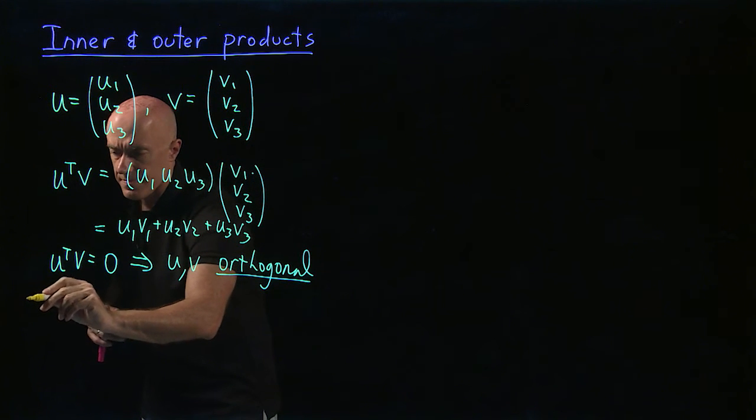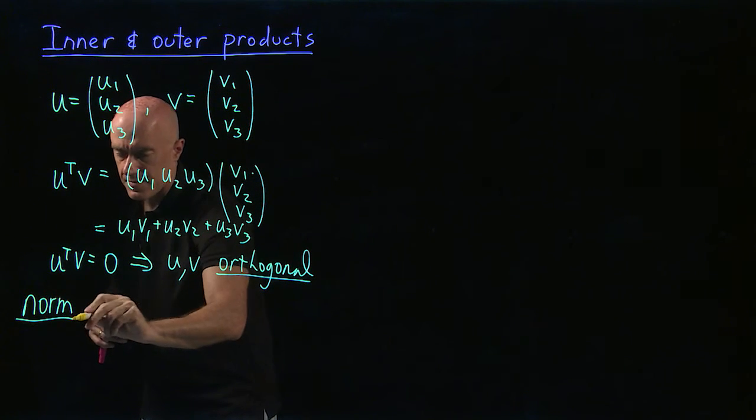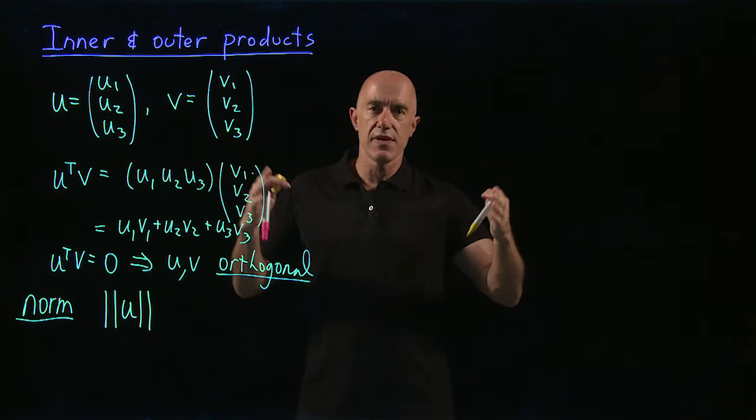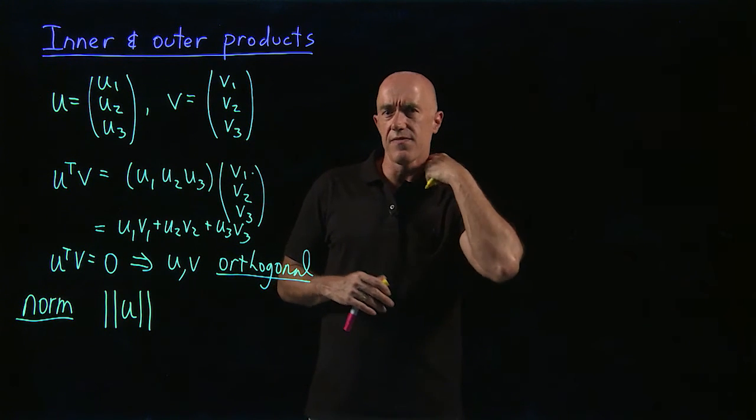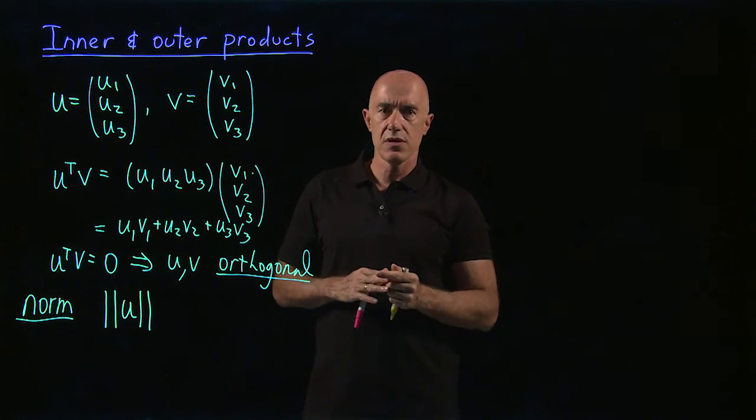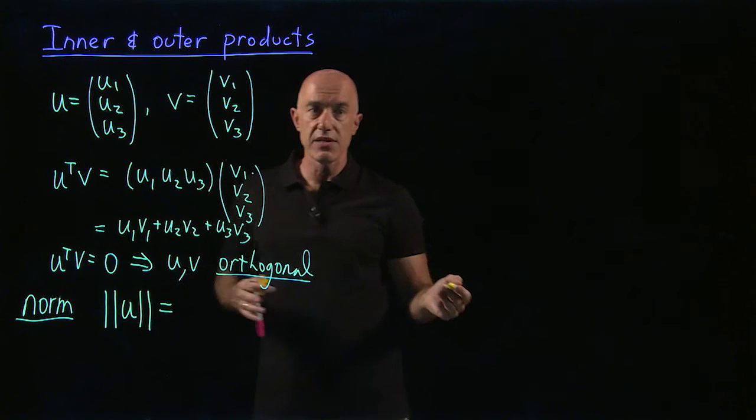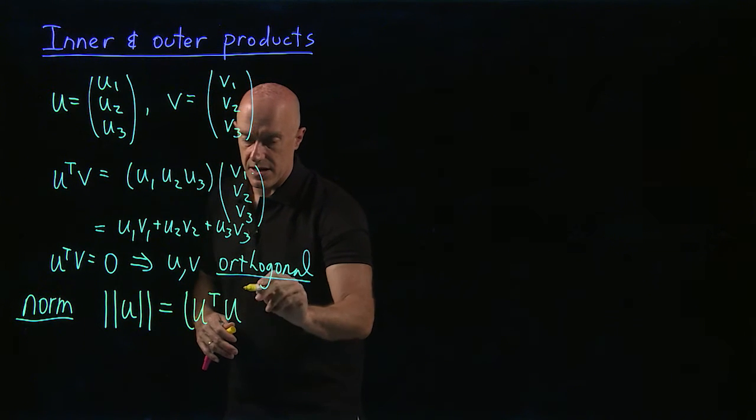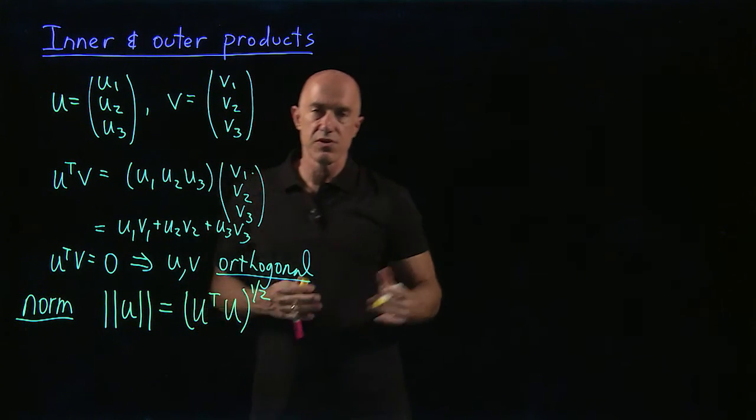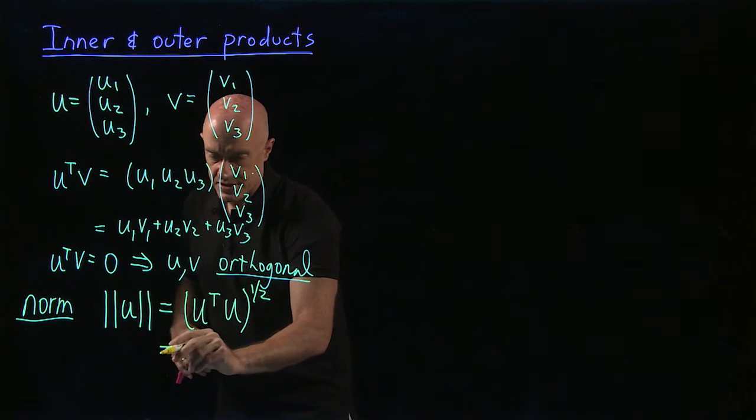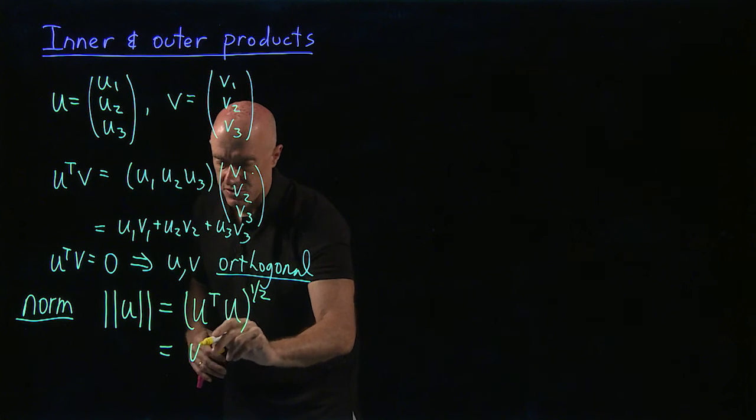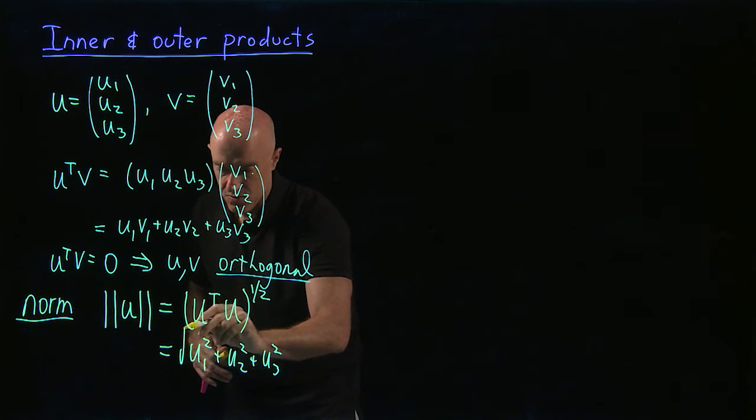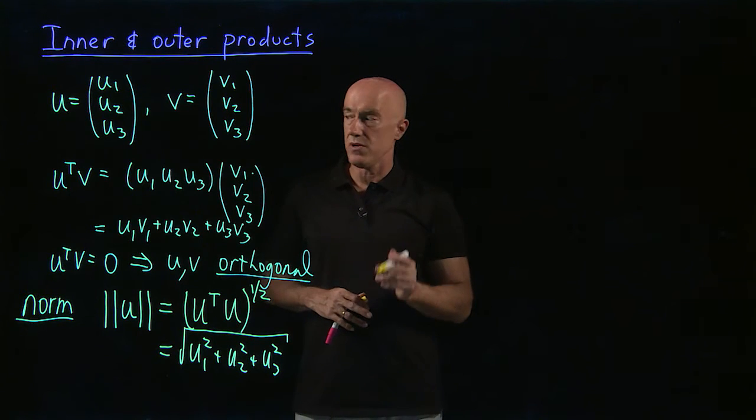We have another definition. We talk about the norm of a vector. This is represented, the norm of the vector u is written with these double absolute value signs. You think of this as the length of u. This is given, in terms of matrices, is u transpose times u. That's a scalar, right? And we raise it to the one half power, which means taking the square root. So this is just u1 squared plus u2 squared plus u3 squared, all to the one half power, or to the square root.